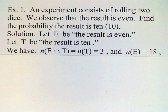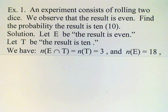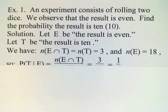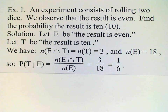What we want is the probability of T given E, so we need the probability of the intersection. Since outcomes are equally likely, we can use counts. The intersection means it's both even and a ten — there's no way to have a ten that is not even, so the number of even tens equals the number of tens, which is three. The number of even rolls is eighteen — half of all rolls — so P(T|E) = 3/18 = 1/6.